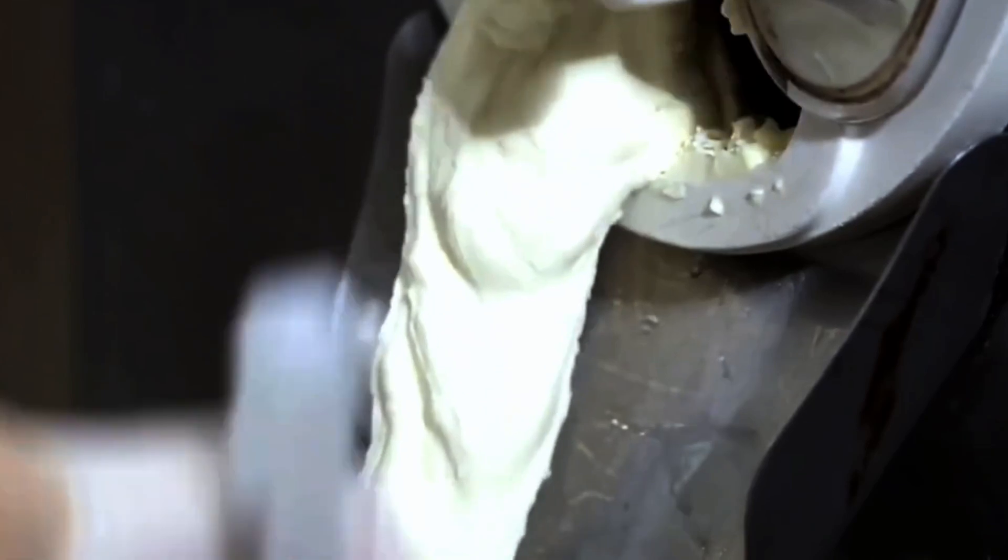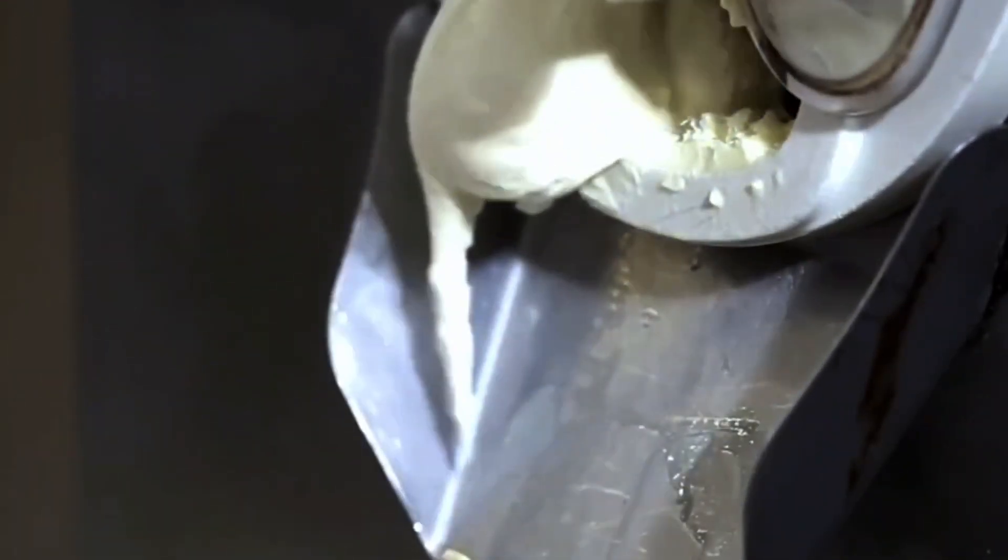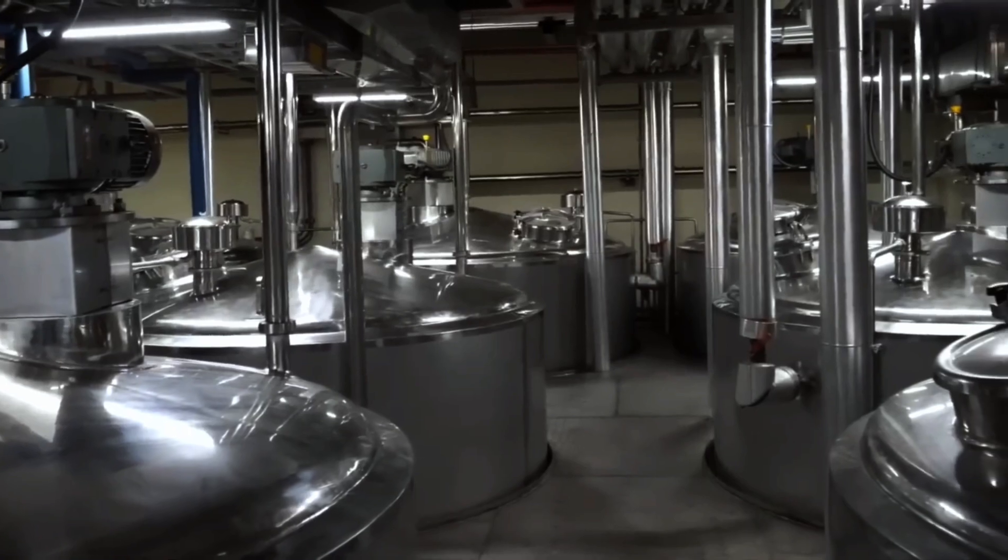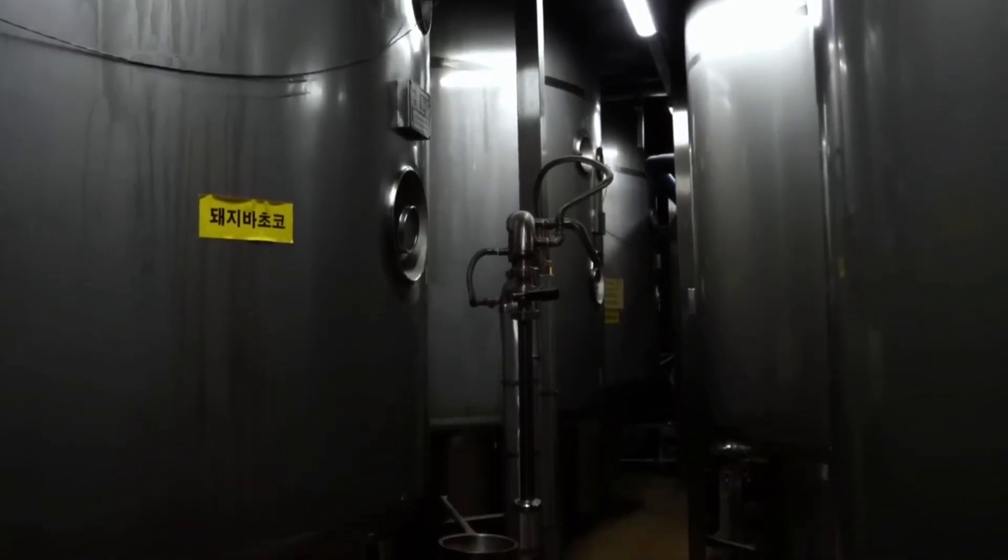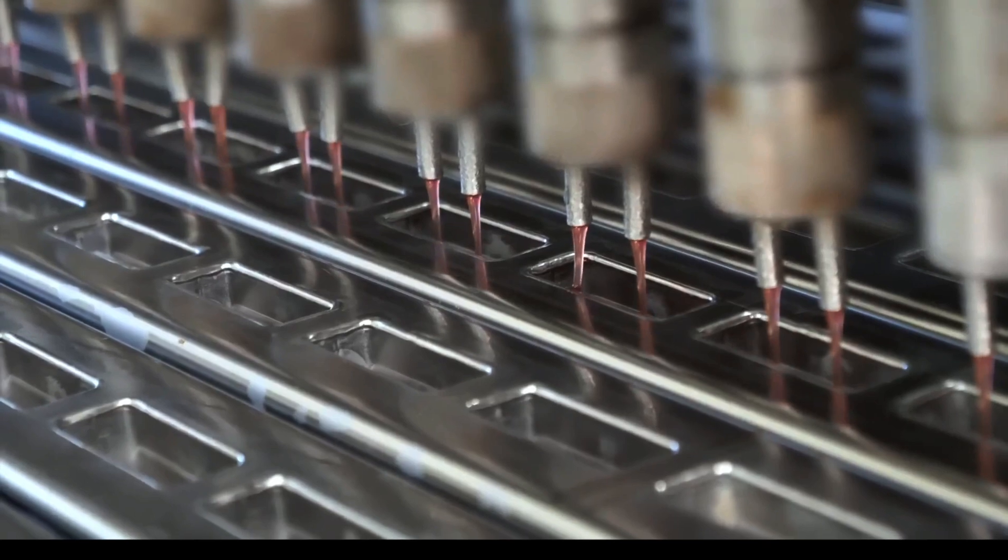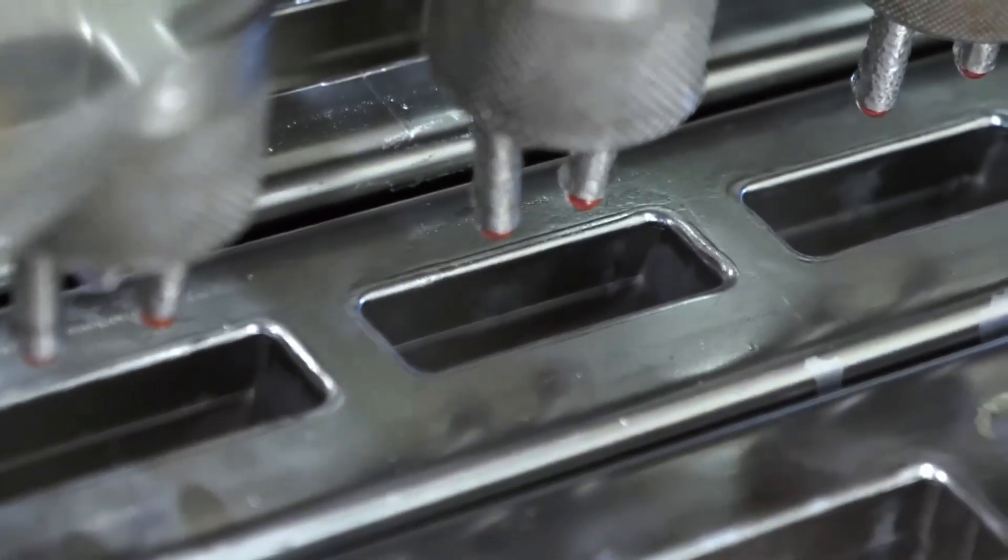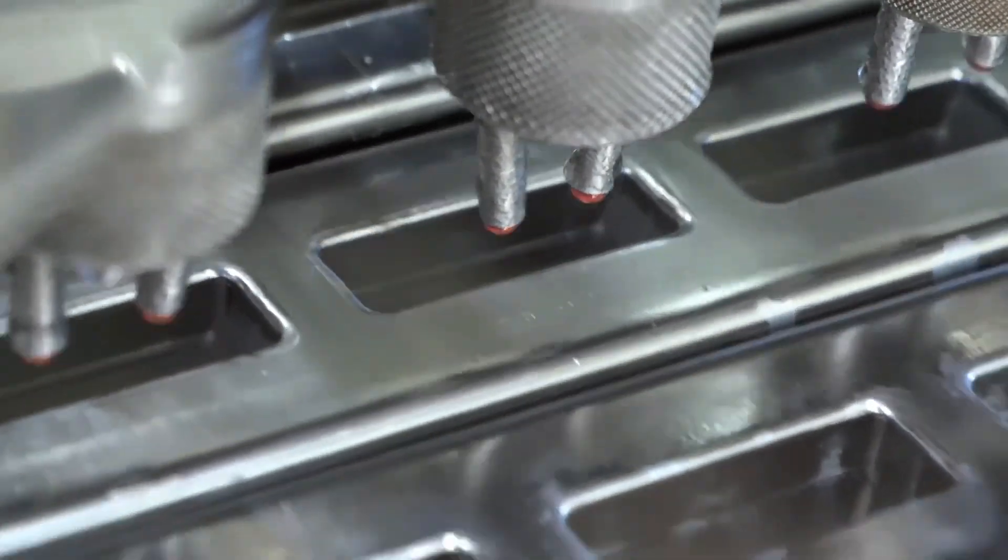This is also when aeration happens. Air is whipped into the mix to create that soft, voluminous texture. This air incorporation is called overrun, the percentage of air in the final product. Premium ice cream may have 20 to 30% overrun, while soft serve can go up to 100%.